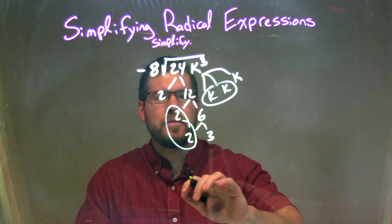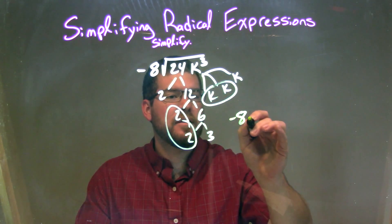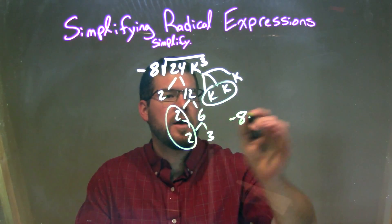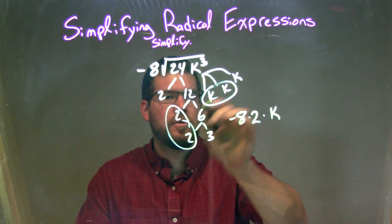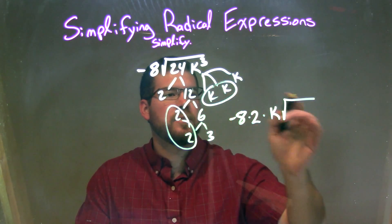So now when I rewrite this, I'm going to put my pairs represented by singles on the outside. So we have negative 8, that stays on the outside, times 2 times k, times the square root of what's left over, the singles, 2 times 3 times k.